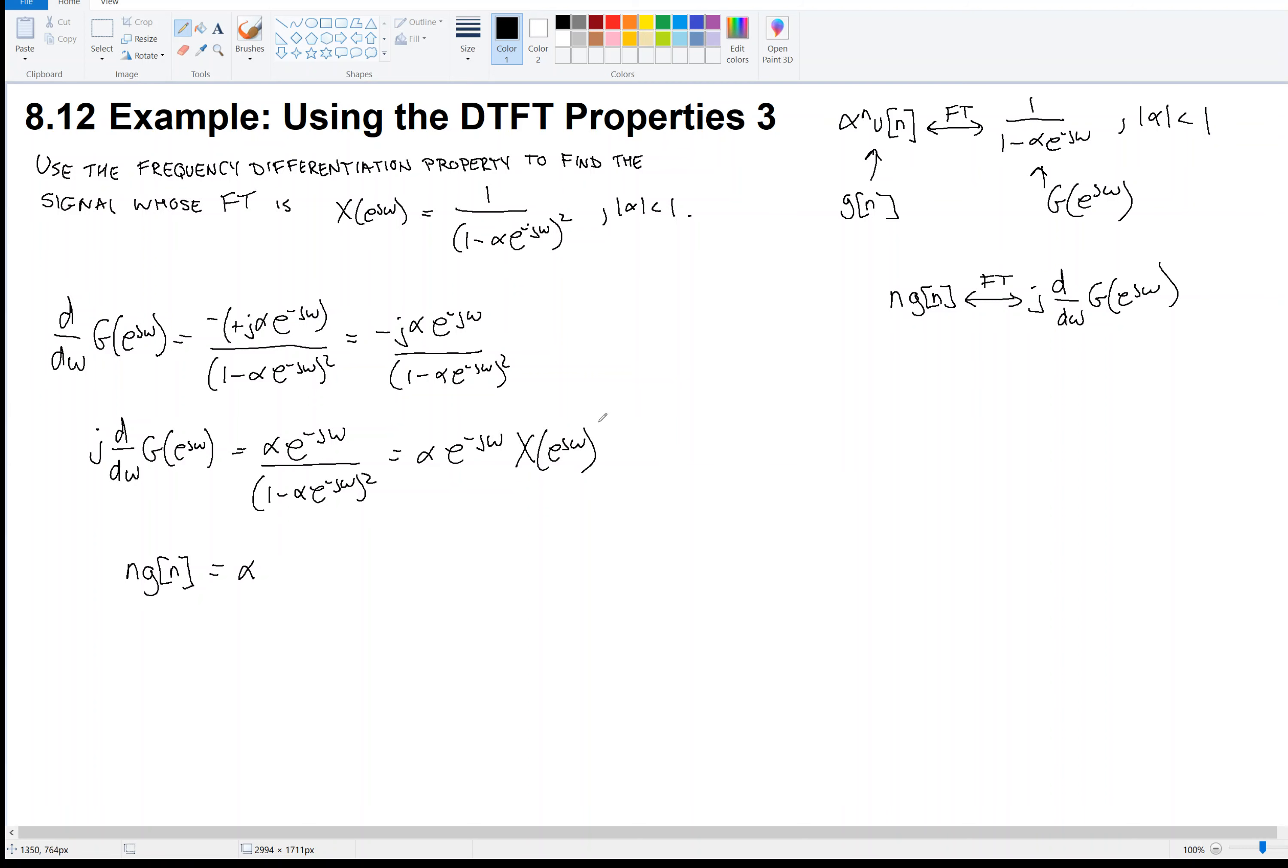Do you remember the time shift property? It says that x[n-n₀] has Fourier transform e^(-jωn₀)·X. Multiplying by a phasor in frequency is like delaying in time. When we form fit this, we see n₀ is 1. So this becomes α·x[n-1]. Good problem here.